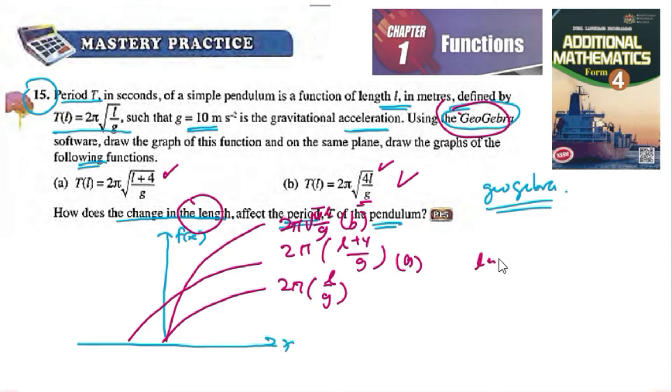When the length increases from l to l+4, the period T also increases. When the length increases, the period increases. For 4l, it increases much higher. This is the answer.